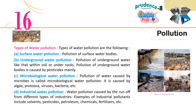Types of water pollution: A. Surface water pollution — pollution of surface water bodies. B. Underground water pollution — pollution of underground water like that within soil or under rocks; caused mainly by pesticides. C. Microbiological water pollution — pollution of water caused by microbes such as algae, protozoa, viruses, bacteria, etc.